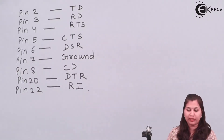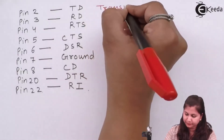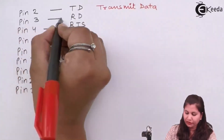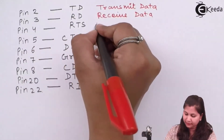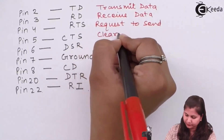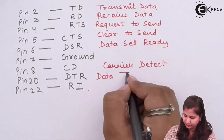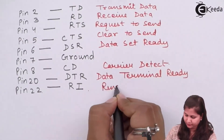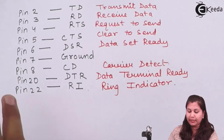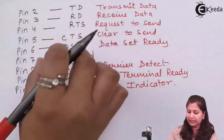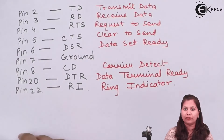Out of those 25 pins, only these pins are defined: pin number 2 is TD, that is Transmit Data; pin number 3 is RD, that is Receive Data; and RTS means Request To Send. In a 9-pin connector, only the essential pins are available. In the 25-pin connector, only these pins are defined and all others are reserved for future use.